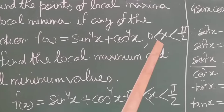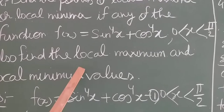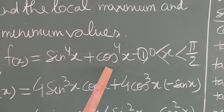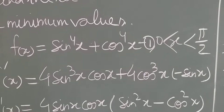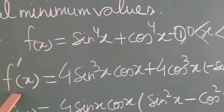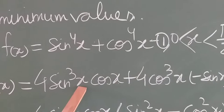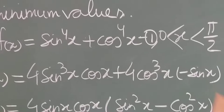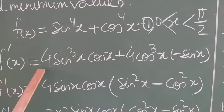Also find the local maximum and local minimum values. So this is the function: f(x) = sin⁴x + cos⁴x — call this equation 1 — and x belongs to (0, π/2). Now let us find its first order derivative. f'(x) = 4sin³x · cosx + 4cos³x · (−sinx), taking the derivative using the power formula.